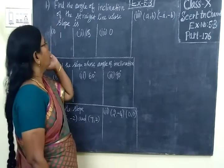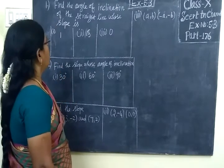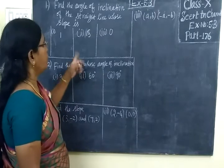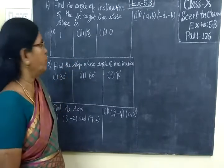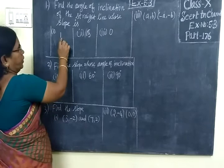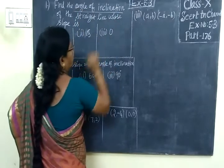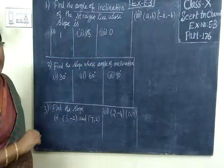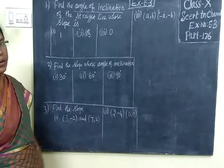Find the angle of inclination of the straight line whose slope is 1, √3, and 0. When slope is given, angle of inclination can be found. Angle of inclination is tan θ.